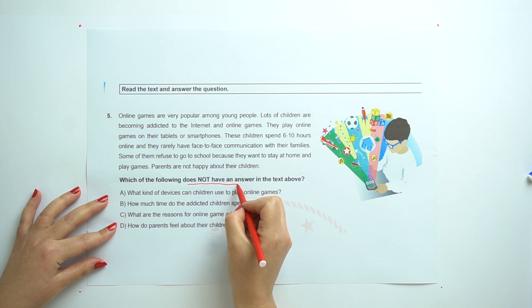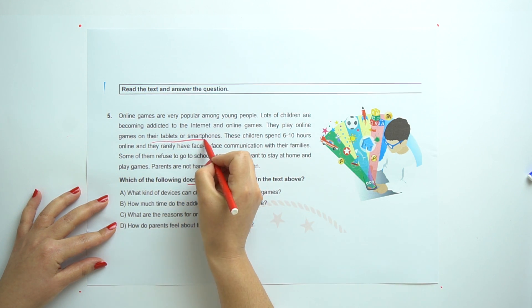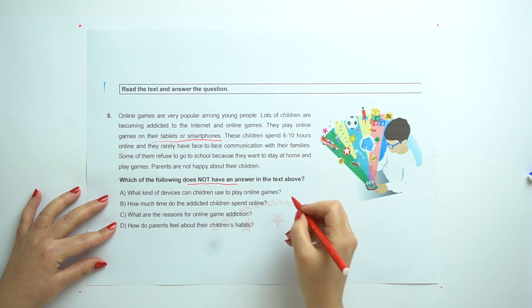So, be careful. Does not have an answer. What kind of devices can children use to play online games? So, they have their tablets and smartphones. So, we have.